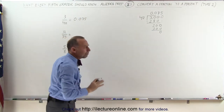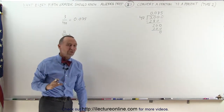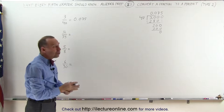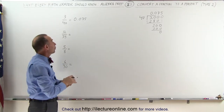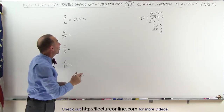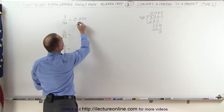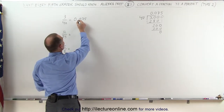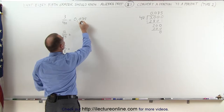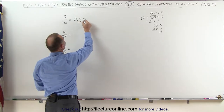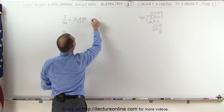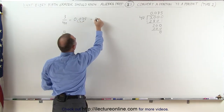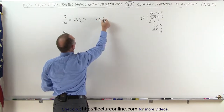Now that we've turned our fraction into a decimal, we use the technique we learned before to turn it into a percent by moving the decimal place over two spots — that's 1, 2 — and therefore we can say that this is equal to 7.5%.